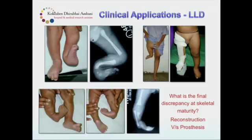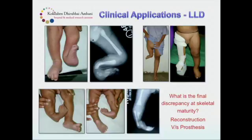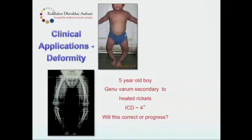We know that the main problem in these children is that at skeletal maturity they have a limb length discrepancy, and the angulation almost entirely corrects itself. When do we time limb lengthening or epiphyseodesis of the contralateral limb? One case has a tibial hemimelia — the same question arises: with such a complex deformity, are we going to reconstruct or give this child an extension prosthesis? Similarly, with proximal femoral deficiency and very severe shortening, should we reconstruct or give a prosthesis?